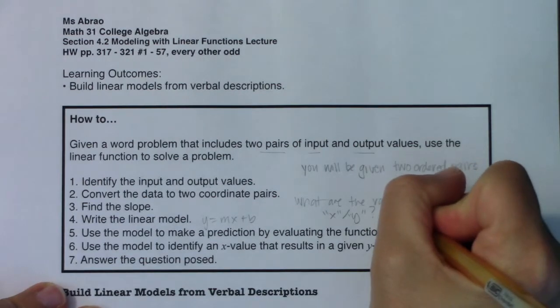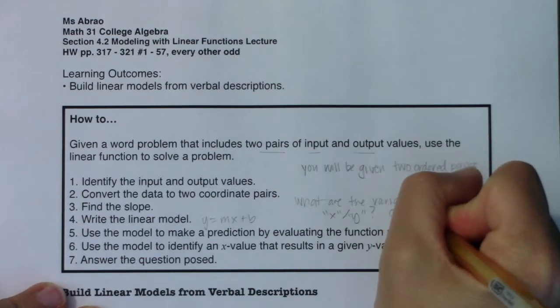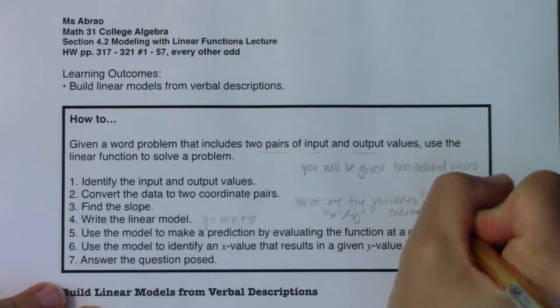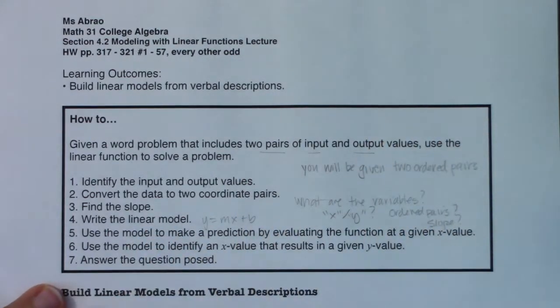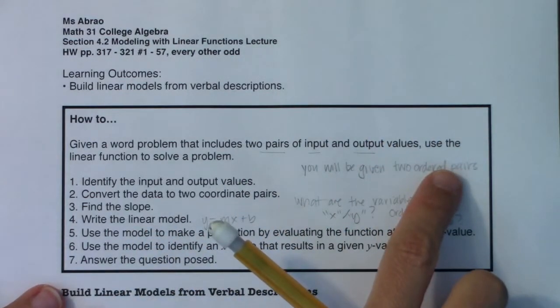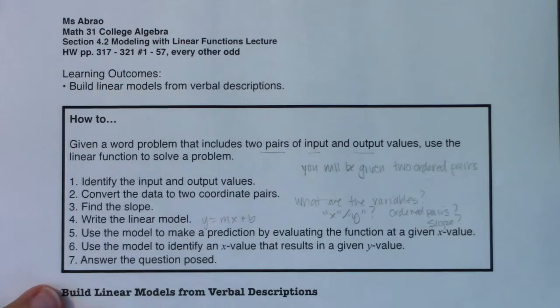And then I was saying in 4.1, ask yourself, were you given ordered pairs? Or were you given a slope? Or maybe you were given one of each. For the problem we're about to do, we're going to be given two ordered pairs. Alright, so with that, let's take a look at this problem.